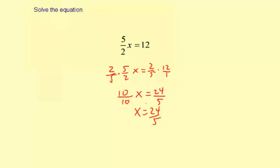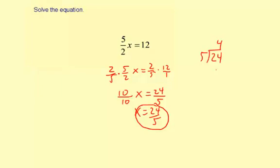And this is a perfectly fine answer. It's an improper fraction — you can leave it like this. Or you can divide it out and get a mixed number. 5 goes into 24 four times.